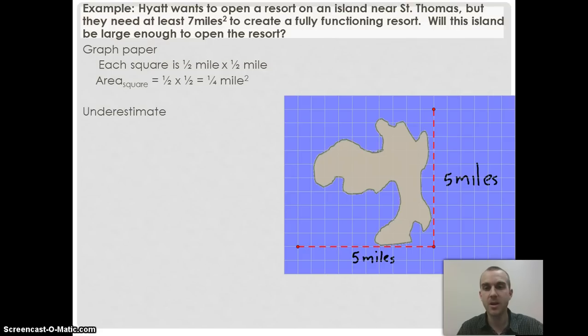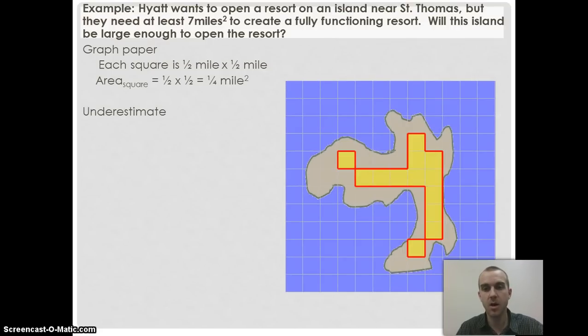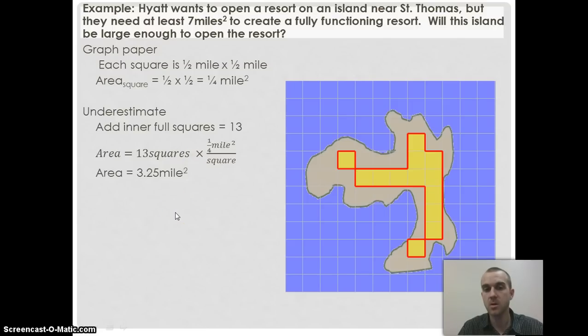I start with my underestimate. I'll put in all the blocks I can—full blocks, no partial blocks. I count them up and get 13 full squares. Now I've got to pay attention: each of those squares is one-fourth of a square mile. So the area is 13 times one-fourth, which gives me about 3.25 square miles.